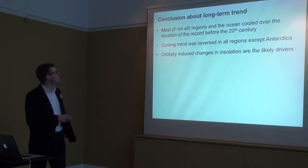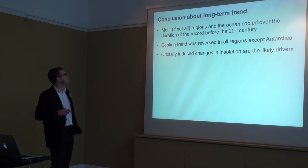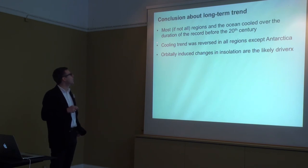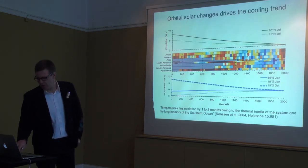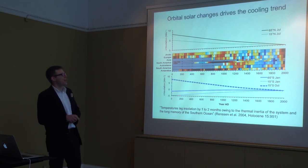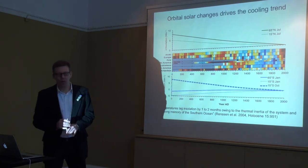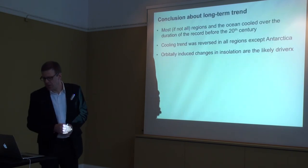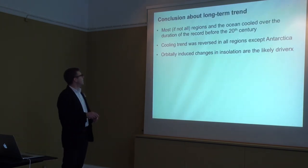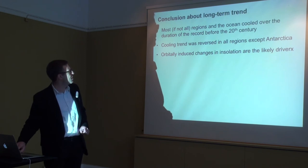The conclusions about this long-term trend: most if not all regions and the ocean cooled over the duration of the record before the 20th century. The cooling trend was then reversed in all regions except Antarctica. After 1900, suddenly the cooling is reversed — all regions except Antarctica are warming. The reason for this cooling is probably orbitally induced changes in insolation.